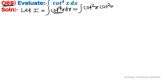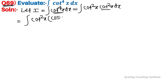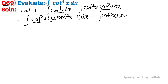We will change cot square x using the identity cot square x equals cosec square x minus 1. So we get integration of cot square x into cosec square x dx minus integration of cot square x dx.